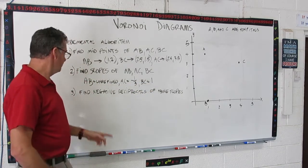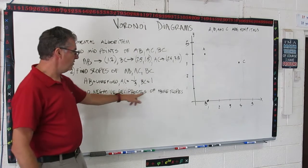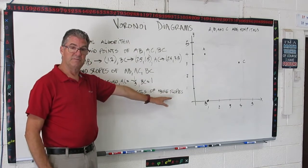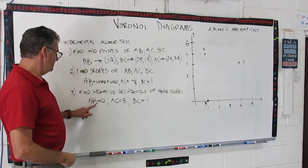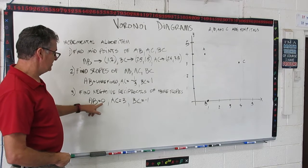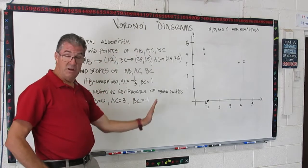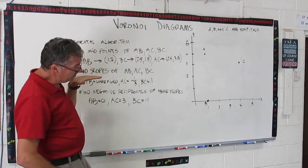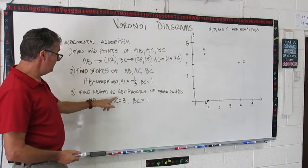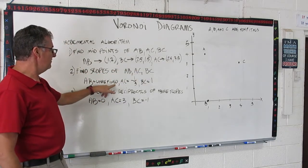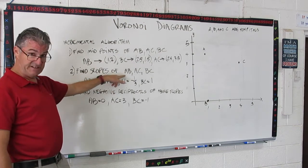Here's your next step. Find the negative reciprocals of those slopes. Pause video and do that. Let's see how you did. The negative reciprocal of slope AB is zero. A vertical line has an undefined slope. A horizontal line has a slope of zero. Remember, and this is where we're going, that the negative reciprocals are slopes of lines that are perpendicular to these lines.